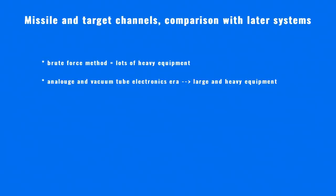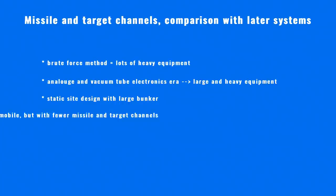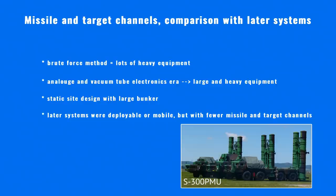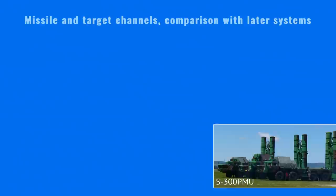Because many target channels were required, the electronics needed to be large and heavy, which also required a large bunker to house them. For comparison, the later designed S-300PS (NATO code SA-10B) had 6 target channels and 12 missile channels, yet the whole system needed only some cabins installed on self-propelled vehicles and only two radars for the whole missile battery — all mobile components on vehicles.